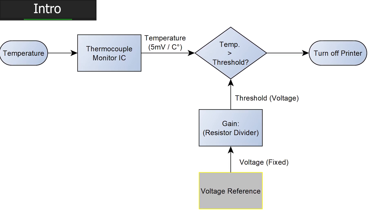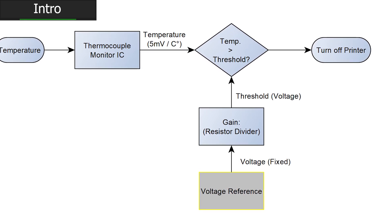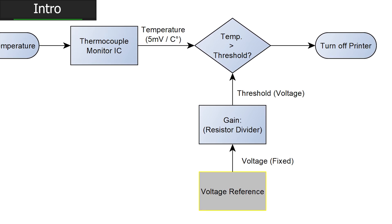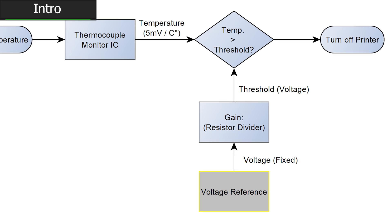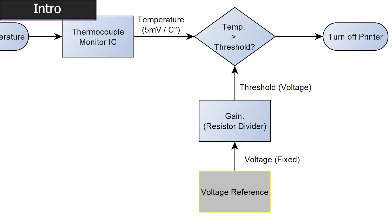That's to say a 1% accurate voltage reference will result in no better than a 1% accurate temperature sensor. This is true for us because temperature is proportional to voltage in this design. There are two commonly available types of voltage references, series and shunt.